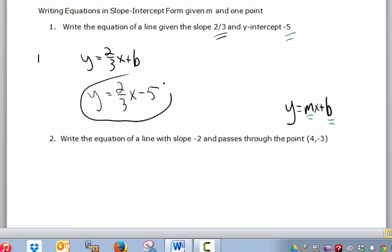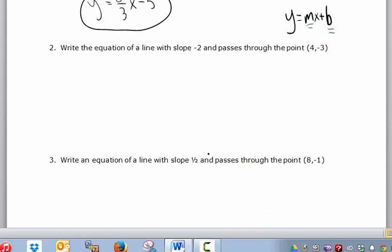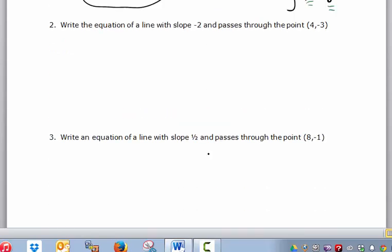In the second one, write the equation of a line with slope negative two, passing through the point (4, -3). So again, I want to visualize my answer. I know it should look like this, only I'll find out what m is, and I'll find out what b is, based on the information given. Now, m is negative two, so that's given.